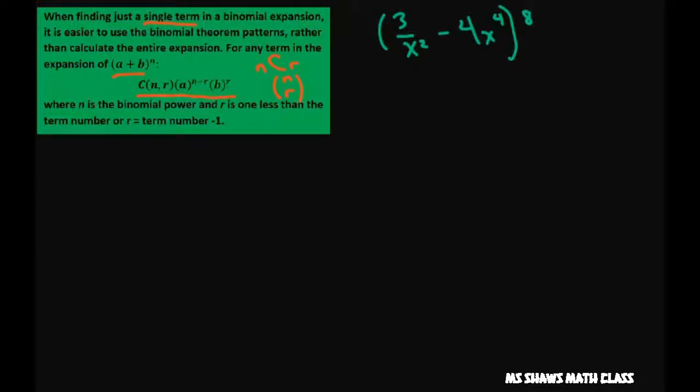So in this case our n equals 8, our a equals, and I'm going to rewrite this as 3x to the negative 2 using negative exponents, and b equals negative 4x to the fourth. And we're going to find r.